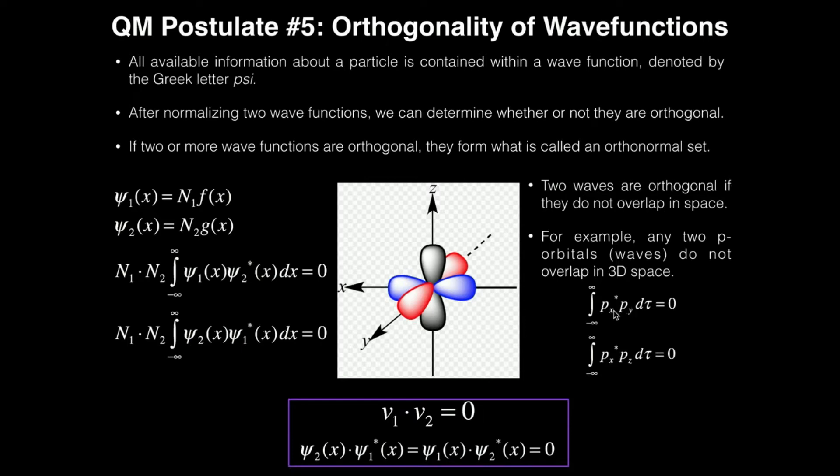Why? Because the wave functions for x and y p orbitals, they're perpendicular or orthogonal to each other. So the integral would be zero. You would get the same result if you did this for the x orbital and the pz orbital. They're orthogonal, so the integral is zero.